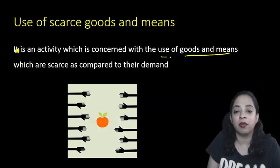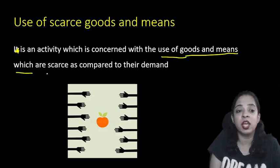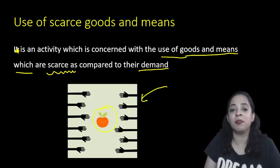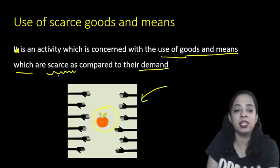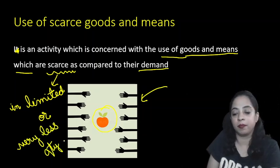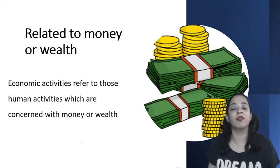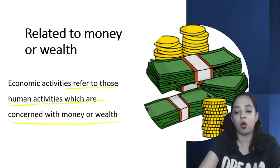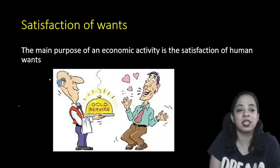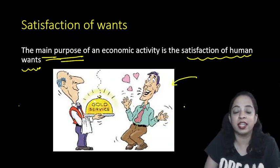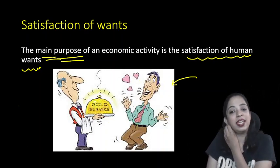In economic activity we use goods and means that are scarce — meaning demand is more but supply is less. These goods and means are in limited quantity. The second element is that economic activities are related to money or wealth — they refer to human activities concerned with money or wealth. The third element is purpose: the main purpose of economic activities is the satisfaction of human wants, so the human should be satisfied with the goods and services being consumed.